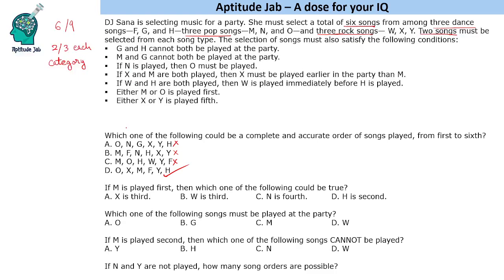The remaining option satisfies all conditions: g and h are not both present; m and g are not both there since g is absent; n is not there so o without n is fine; x and m are both played with m after x; w and h condition doesn't apply; either m or o is played first with o first; and x or y is fifth — all satisfied.